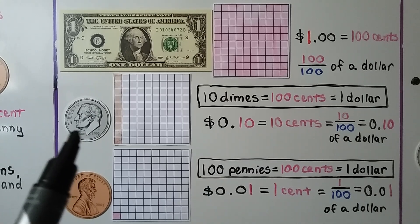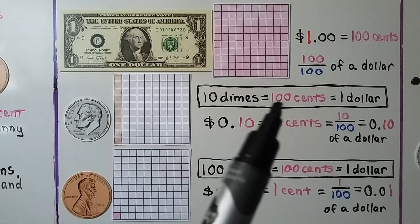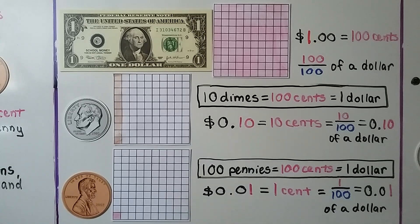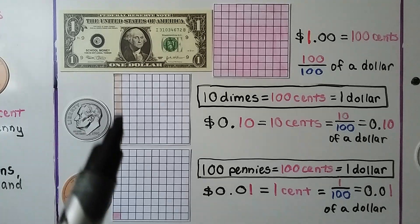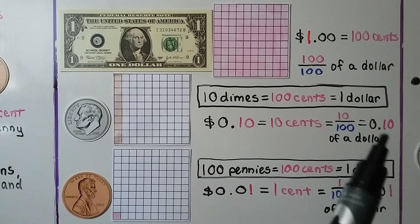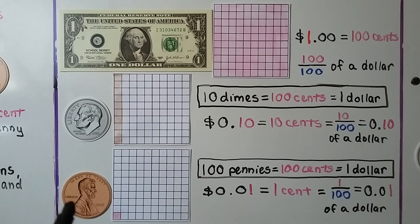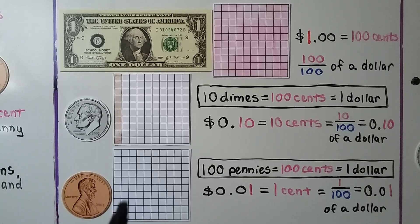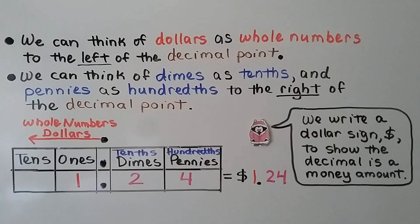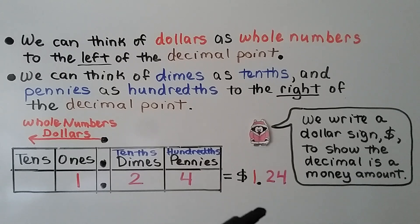One dime is 10 cents. It takes 100 cents to make a dollar, so we need 10 dimes to equal a dollar. Ten cents is equal to 10 hundredths of a dollar. One penny is one cent — we need 100 pennies to equal one dollar. One cent is one hundredth of a dollar. We can think of dollars as whole numbers to the left of the decimal point, dimes as tenths, and pennies as hundredths to the right of the decimal point.